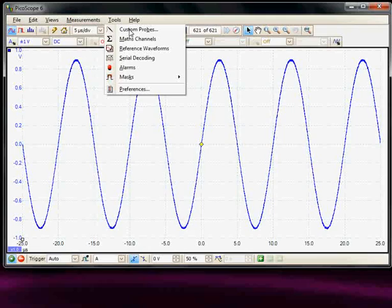So the first one is the custom probe menu, so we can customize our own input channel probing. For example it could be a current probe, and we could change the vertical scale factors then to display current.